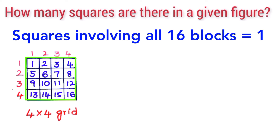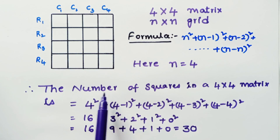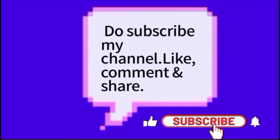Finally, how many squares involve all 16 blocks? There is only one square involving all 16 blocks — the entire 4×4 grid. Adding all combinations together: 16 + 9 + 4 + 1 = 30. There are totally 30 squares present in a 4×4 square grid matrix. I hope you all understand how to count the number of squares. For more interesting videos, please subscribe to Teaching and Learning STEM Concepts.